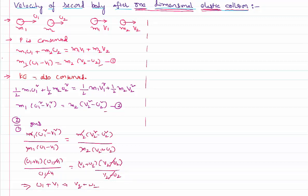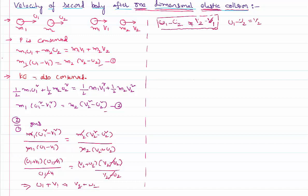Rearranging the terms, we get u1 − u2 = v2 − v1. This means the relative velocity of approach before the collision equals the relative velocity of separation after the collision. Now I want to calculate v2, so I shall eliminate v1. From this relation, I can write v1 = v2 − u1 + u2.